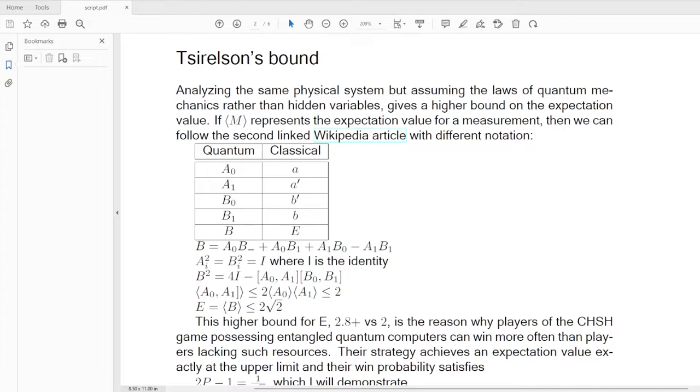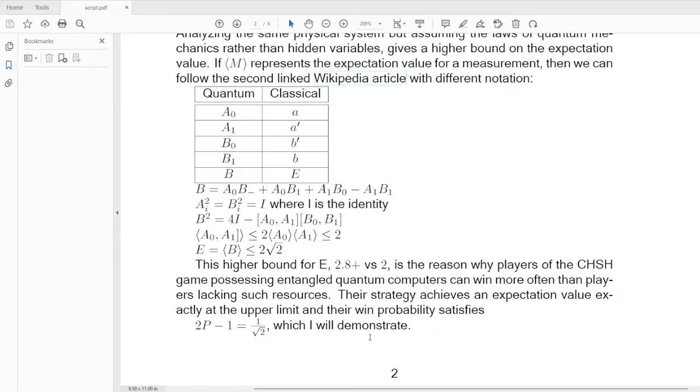It's a little more than 2.8 versus two. This is the reason why the players of the CHSH game, when they have entangled quantum computers, they can win more often than when they're playing without these resources. Their strategy achieves an expectation value exactly at the upper limit. And their win probability satisfies 2p minus one equals one over the square root of two, which I will now demonstrate.